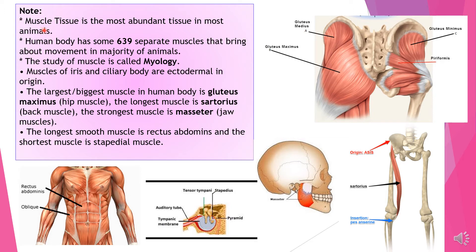Muscle tissue is the most abundant tissue in most animals. The human body has approximately 639 separate muscles that bring about movement in the majority of animals.